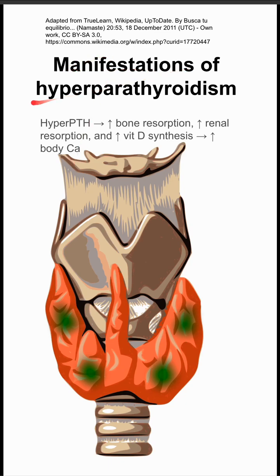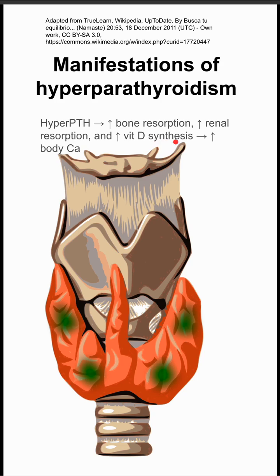These are the manifestations of hyperparathyroidism. In hyperparathyroidism, the high parathyroid hormone causes a few things in the body: increased bone resorption, increased renal resorption of calcium, and increased vitamin D synthesis. All three of these things lead to increased levels of total body calcium.